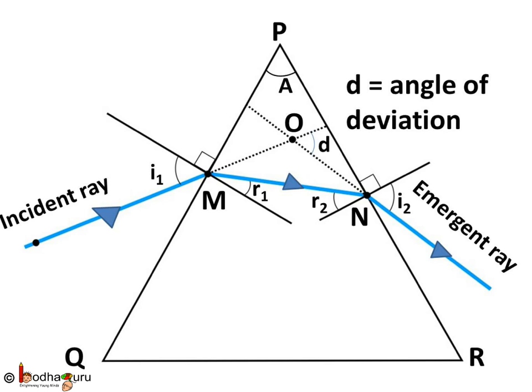Which means, how much the ray has deviated because of the prism. Now, how much the ray will deviate depends on the angle of prism, that is angle A.